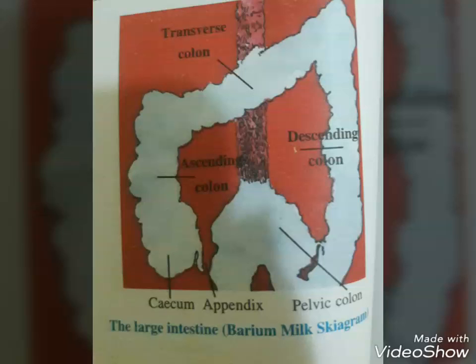The pancreas is a compound, both endocrine and exocrine, elongated organ situated between the limbs of the U-shaped duodenum. The exocrine portion secretes an alkaline pancreatic juice containing enzymes, and the endocrine portion secretes hormones insulin and glucagon.